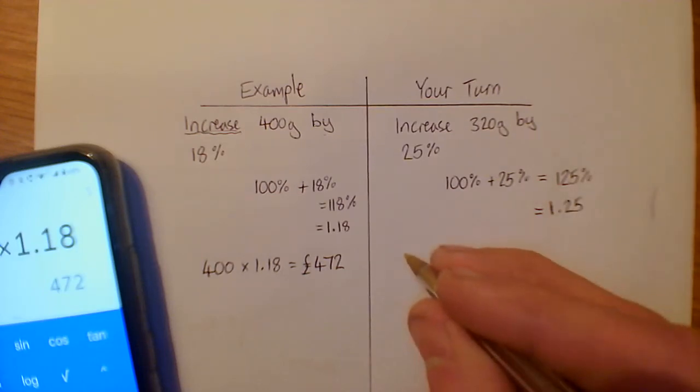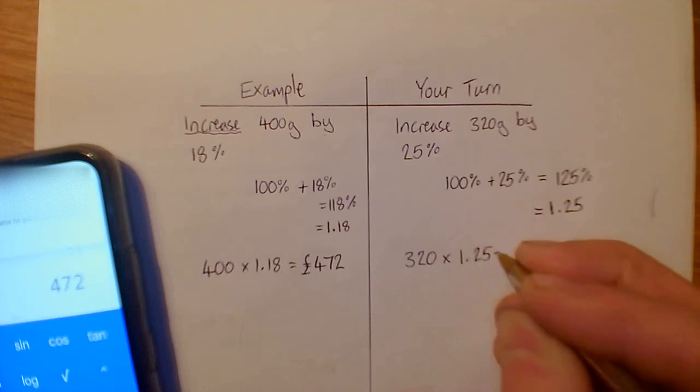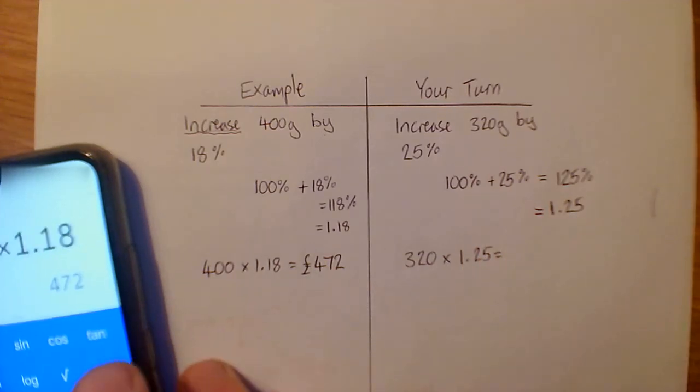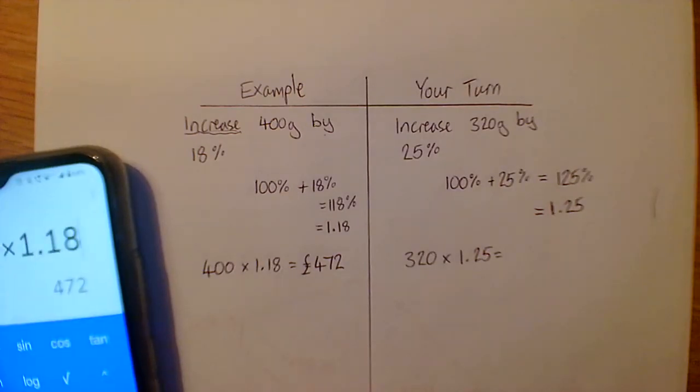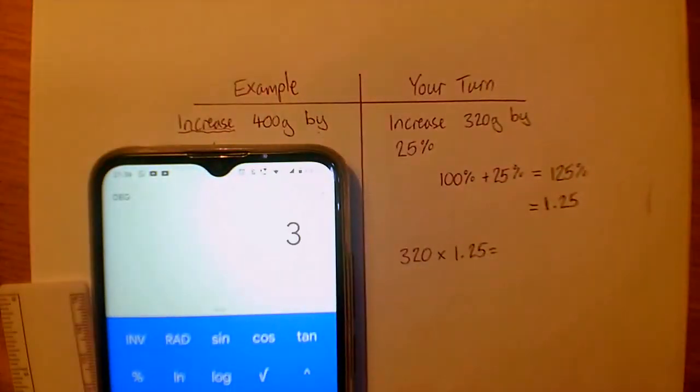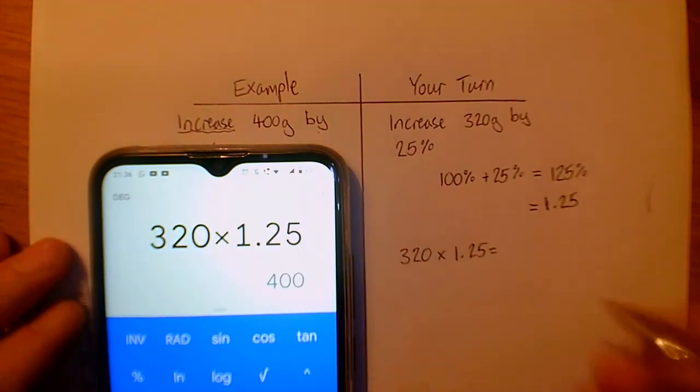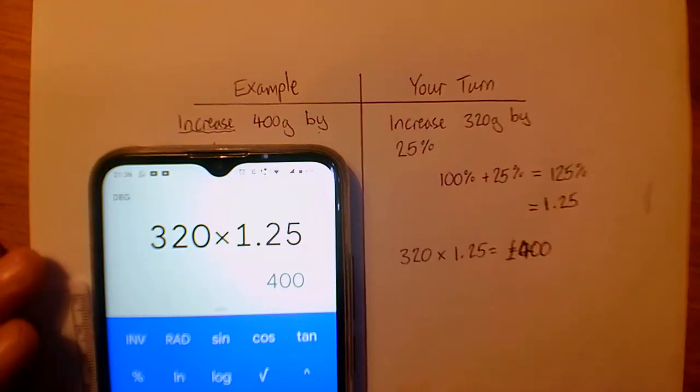Now we take our amount, which is 320, and we times it by 1.25. Well, what does that give us? My calculator's gone wrong. What does that give us? Well, that is 320 times 1.25, which is 400 pounds as our finishing amount of money. So 400 pounds is our answer.